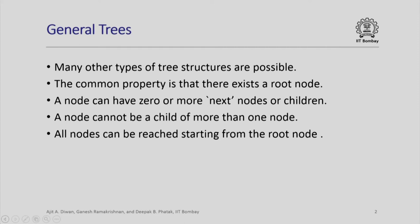The common property in all these tree structures is that there is a starting node called a root node, and a node can have 0 or more next nodes which are called children. A node cannot be a child of more than one node — it has a unique parent — and all nodes can be reached starting from the root node by looking at its children, grandchildren, and so on.